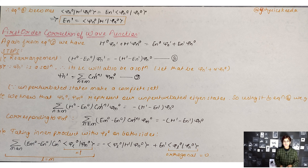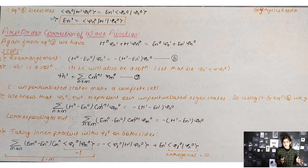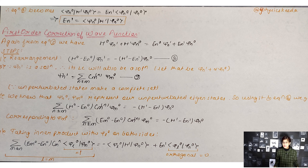Now we talk about the first-order correction of the wave function. Again from the λ¹ equation: H₀ψ_m1 + H'ψ_m0 = E_n0 ψ_m1 + E_n1 ψ_m0. After rearrangement, since ψ_m1 satisfies this equation, its linear combination also satisfies it. Let ψ_m1 + αψ_m0 be another solution.